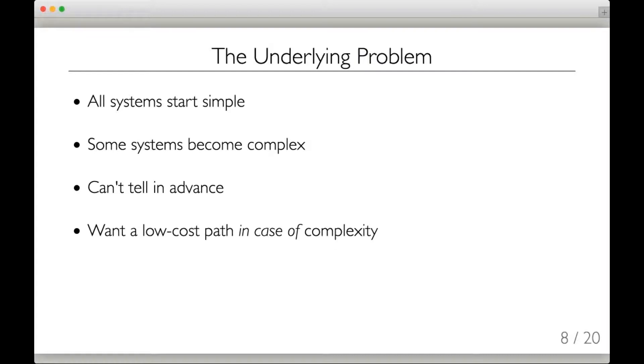The underlying problem behind all of this is that every system starts out very simple. The problem is it might become complicated later, and we don't necessarily know in advance what those complexities might be or if they're going to occur at all. We would like to think we could plan ahead if possible so that if the system becomes complicated, we would have a good refactoring and maintenance path to follow. We want a low-cost path in case of complexity, but we just can't tell in advance if the system is going to become complicated enough to require a Data Mapper later.